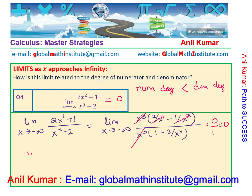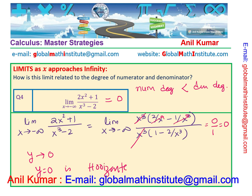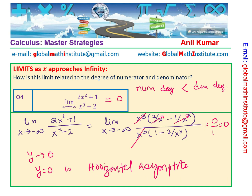So we see that y approaches 0, meaning y = 0 is the horizontal asymptote. Many times, these questions also appear when you have to find the horizontal asymptote for a rational function.